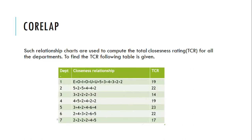Such relationship charts are used to compute the Total Closeness Rating (TCR) for all the departments. To find the TCR, we calculate it using the previous relationship table. The resulting TCR values are 19, 22, 40, 19, 23, and so on for each department.